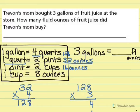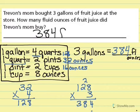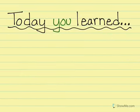3 times 8 is 24. 3 times 2 is 6, plus 2 is 8. 3 times 1 is 3. So that would be 384 fluid ounces.